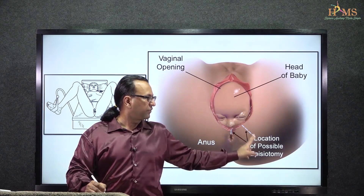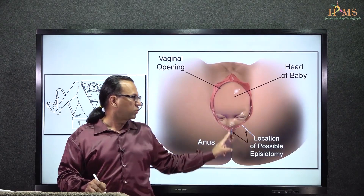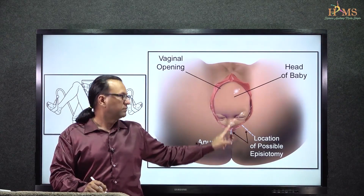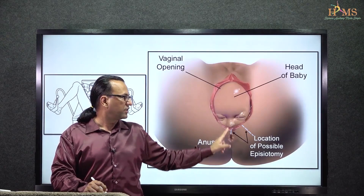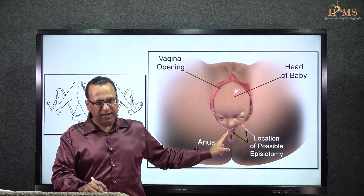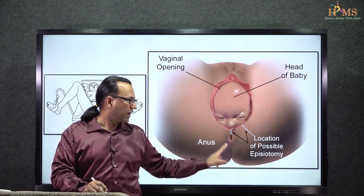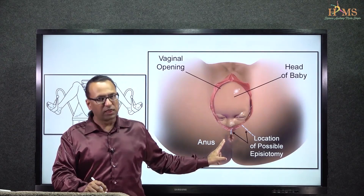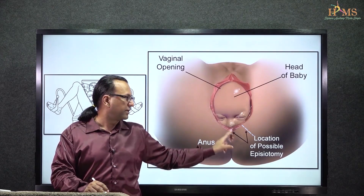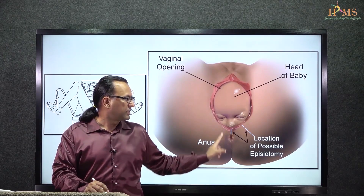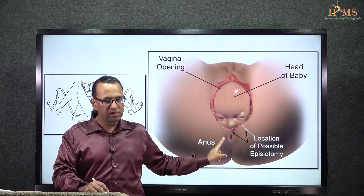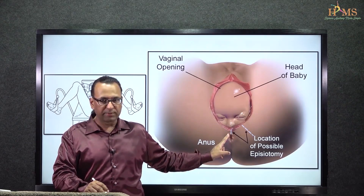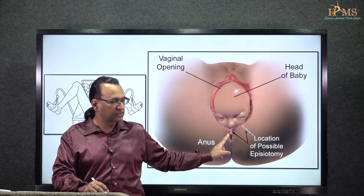Usually mediolateral is preferred because you don't want to reach the perineal body. But if you have given a midline incision, it might extend more posteriorly and damage the external anal sphincter. That will be a problem because it can later result in fecal incontinence — that may be what the examiner is asking us about.